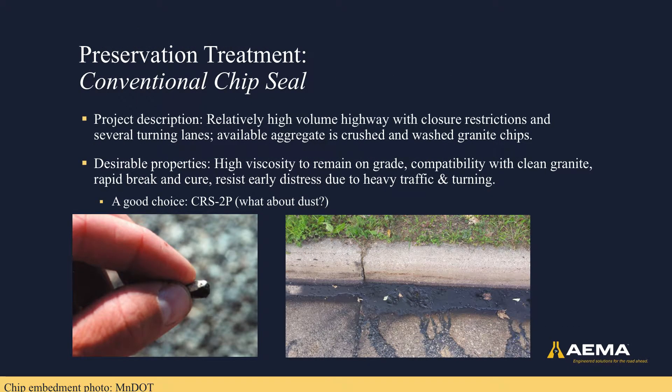Another example that we have discussed is chip seals. Here we have a project description that indicates we'll be dealing with relatively high volumes of traffic with limited closure time — usually that means adding a polymer in the emulsion system. The aggregate is listed as a clean granite. What we want out of the emulsion would be a high viscosity to remain on grade and a product that produces a thick film to lock in the aggregate, but something that would cure quickly to resist the high traffic loads. A good choice here might be CRS 2P — that's cationic, rapid-set, high-viscosity, with polymer. Now say the chips were a more dusty limestone instead of granite, and washing was not an option. In that instance, we'd still want the polymer to resist the high traffic, but choosing a high-float type emulsion might make more sense to deal with the dust — something such as HFRS 2P, that's high-float, rapid-set, high-viscosity, with polymer.